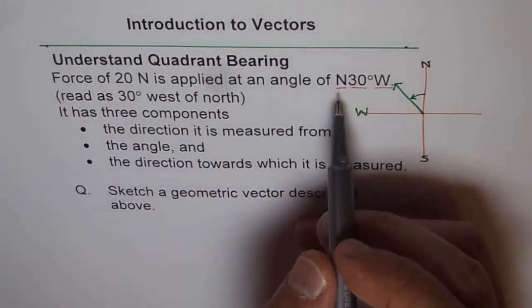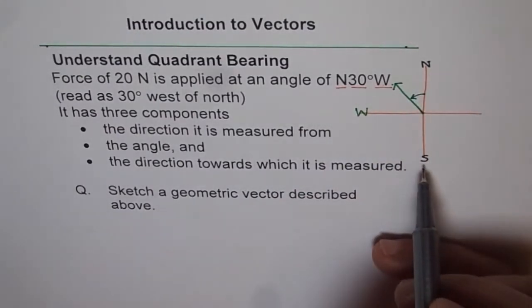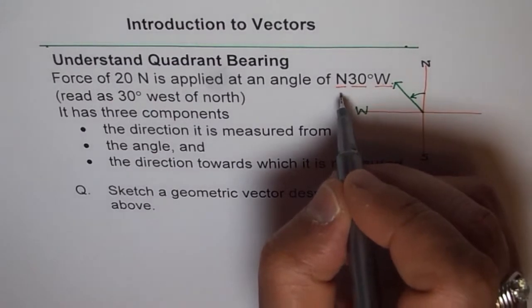So the first component could be either north or south. That is the only possibility.